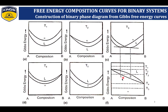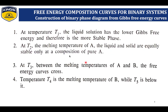All these are explained by Gibbs free energy. At temperature T1, the liquid solution has lower Gibbs free energy and is therefore the more stable phase. At T2, which is the melting temperature of A, the liquid and solid are equally stable only at the composition of pure A. At T3, between the melting temperatures of A and B, the free energy curves cross. At T4, which is the melting temperature of B, and T5, which is below it, the solid is more stable.